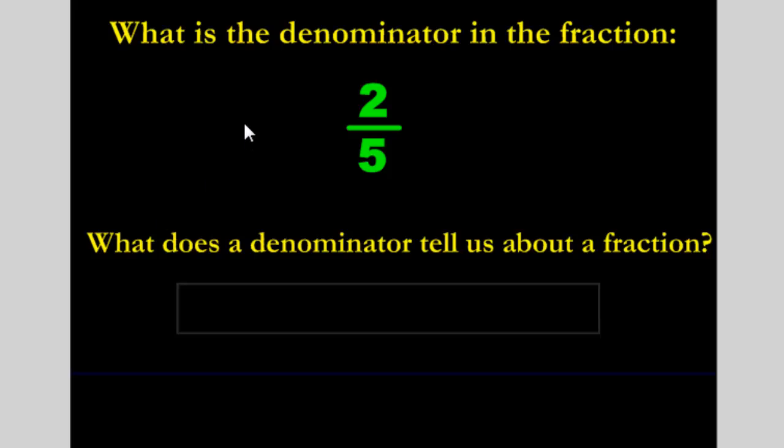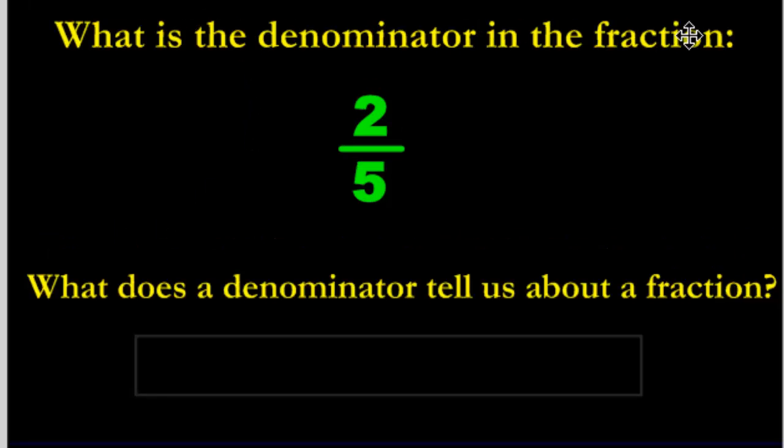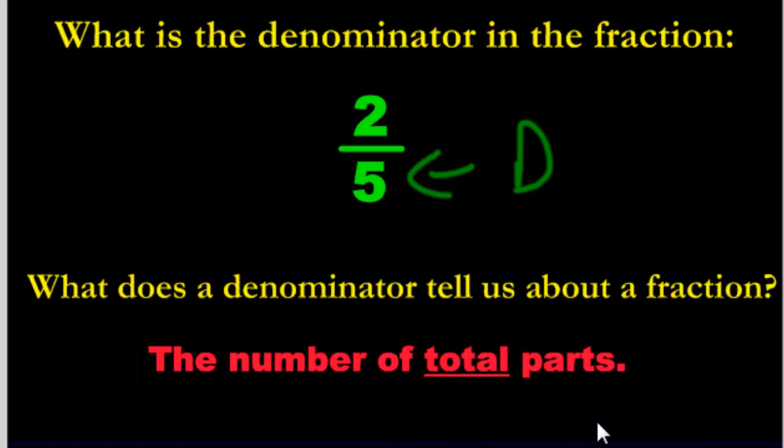So now we're going to look at a couple examples. You try them. See how well you do. So we have what is the denominator in the fraction? What does the denominator tell us about a fraction? Go ahead and write your answers down. So what is the denominator in the fraction? You should have written denominator is this one. It's the five. And what does the denominator tell us? It tells us the number of total parts there are. How many pieces there are all together.